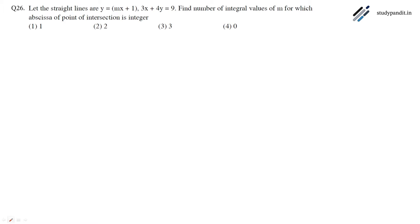So the question here is let the straight lines y equals mx plus 1 and 3x plus 4y equals 9. Find the number of integer values of m for which the abscissa of the point of intersection is integer.